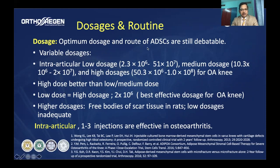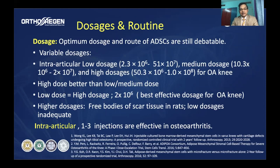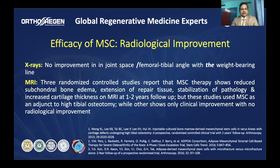The optimal dose is debatable with variable doses used. Low doses have been considered as low as 2.3 million while high doses reach 50 billion. The effect seems to be better with a higher dose than low or medium, although one study shows that even 2 million cells can be as effective as a high dose, though a high dose may produce longer-lasting results. Animal studies suggest that very high doses may increase risk of free body formation and scar, while low doses may be inadequate. One to three injections have been shown effective for osteoarthritis.